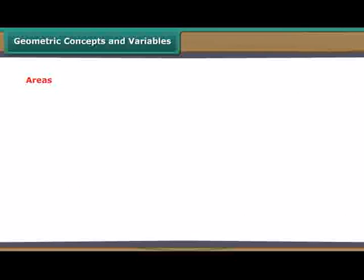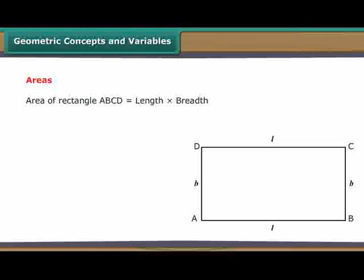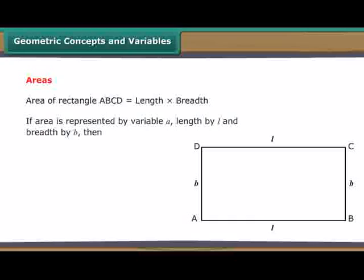Areas: Area of rectangle ABCD is equal to length into breadth. If area is represented by variable A, length by L, and breadth by B, then A is equal to L into B. Variable A varies with variations in the variables L and B.